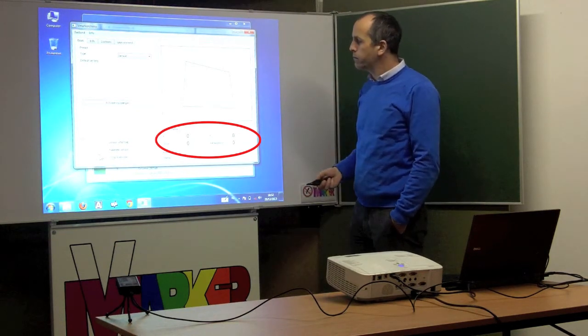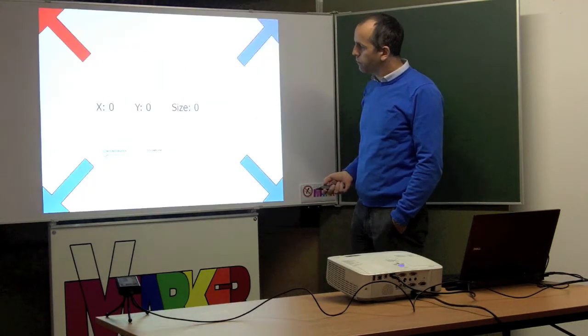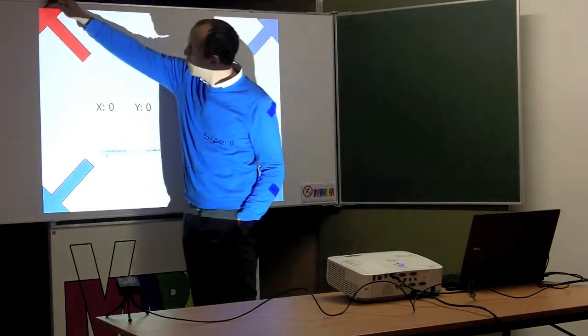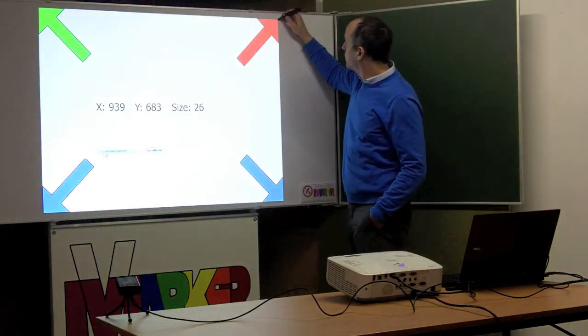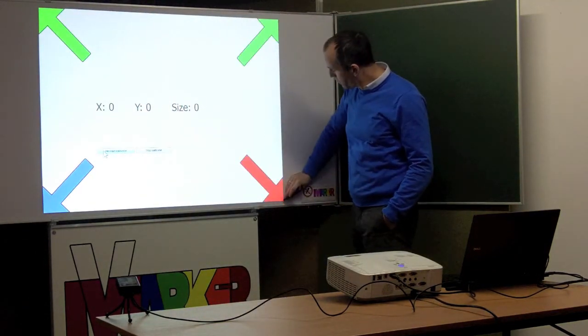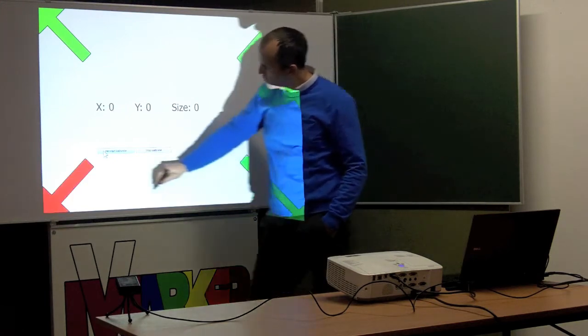The calibration can be started. The red arrow indicates which corner to point at. Release the pen and the corner will be calibrated. Point at the next corner indicated by the red arrow.